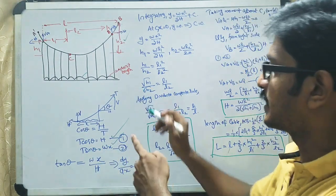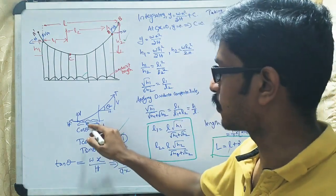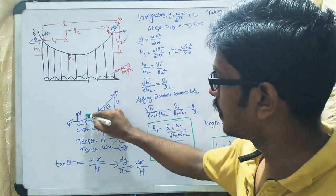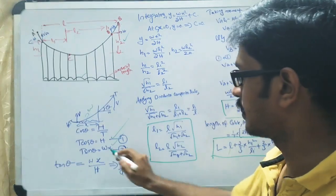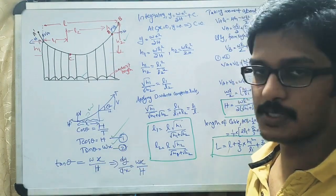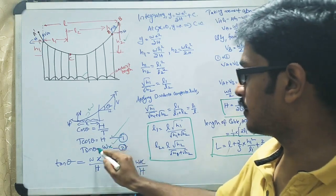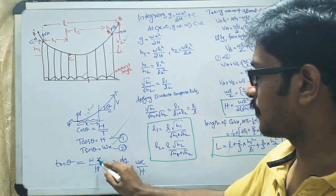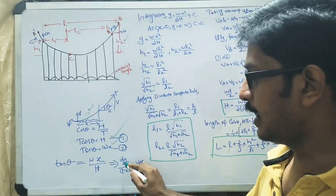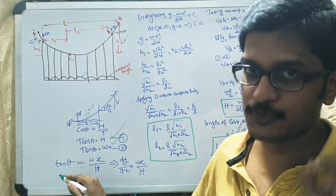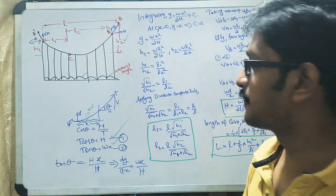If you divide the second equation by the first, you get tan θ = wx/H. We also know that tan θ equals the slope, which is dy/dx. Therefore dy/dx = wx/H.